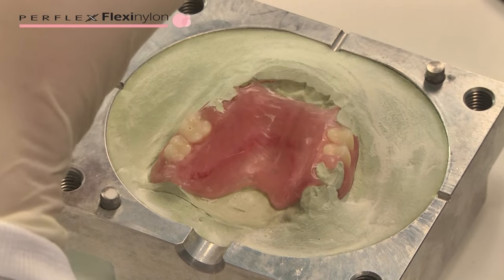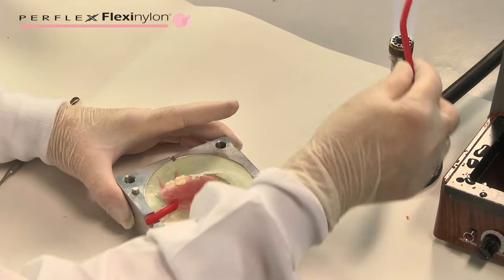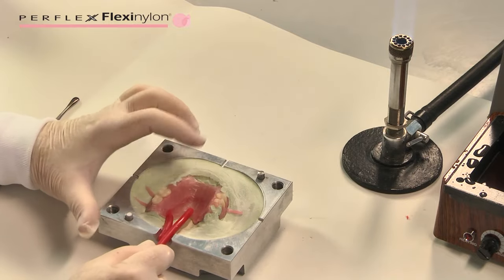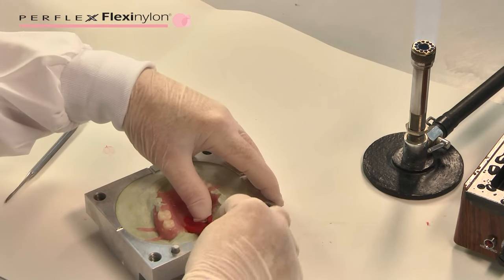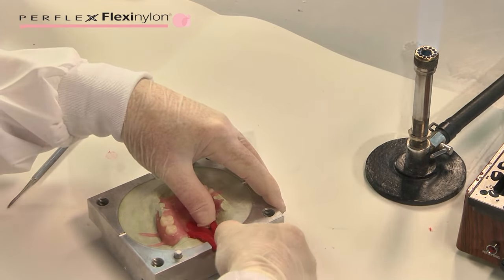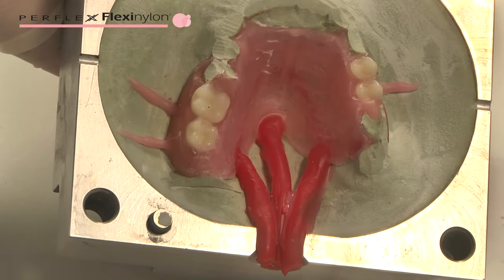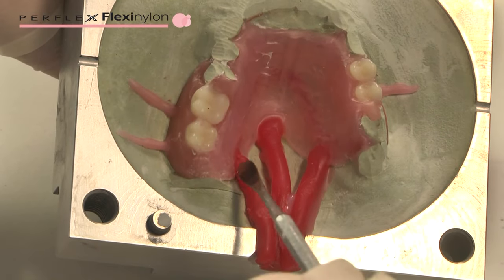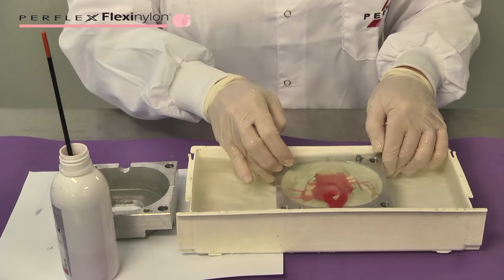Spruing: Position the sprue and vents. Using a round red sprue, 5 millimeter diameter, make three single sprues, one in the middle and one on either side, right and left. Fill the gap between the round sprue and the stone with wax. Create some ventilation wax sprues to let the air bubbles escape. The sprue wax should be connected to the wax up. Place in a water bath for 15 minutes.